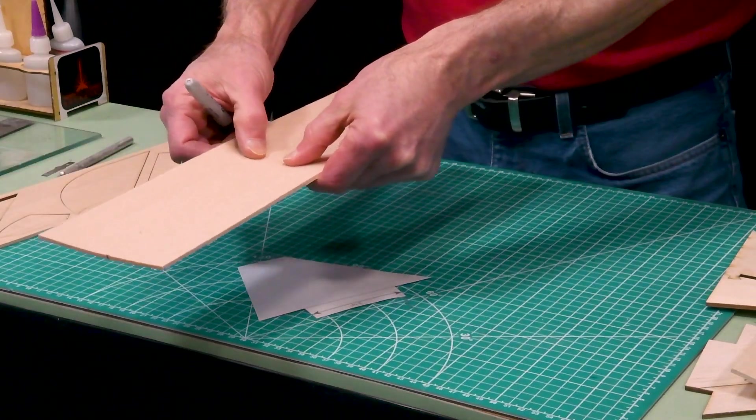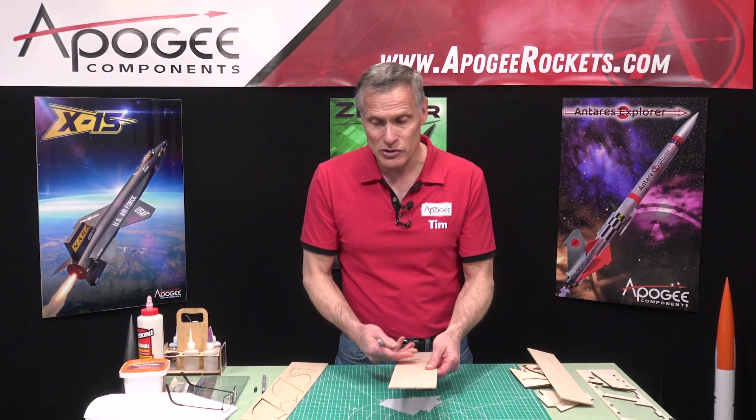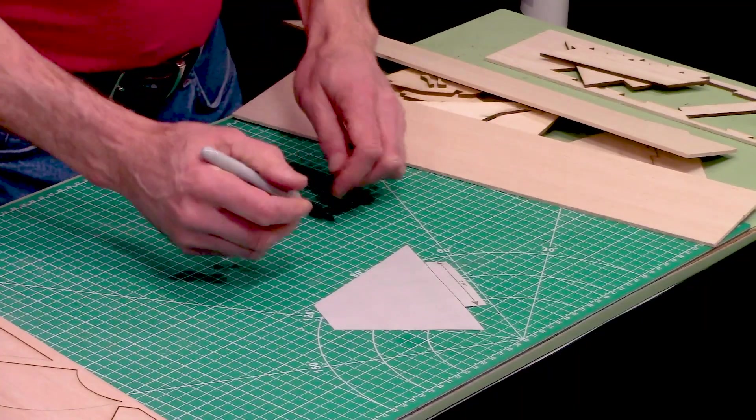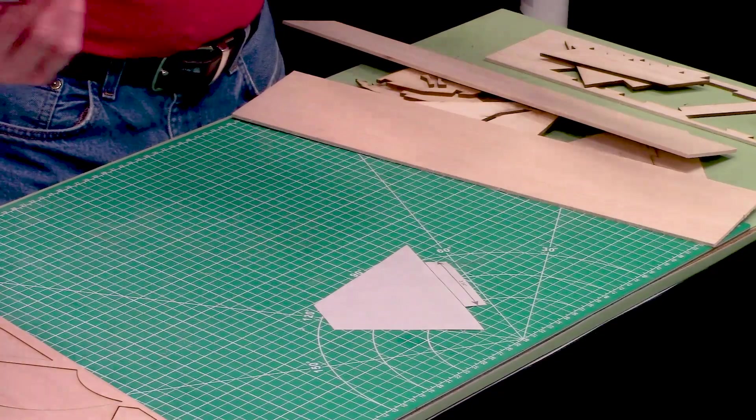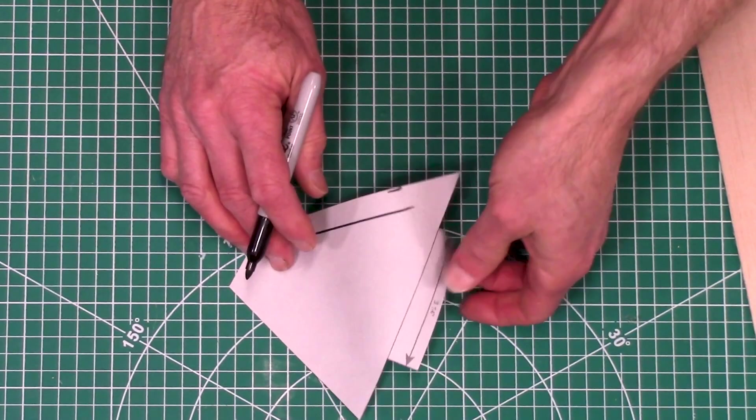Which means you can't bend it or crack it easy going this way. But if you took it this way, you could snap it right in half.